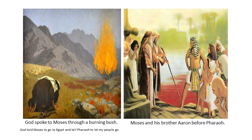God called Moses and spoke to him through a burning bush. He sent Moses and his brother Aaron to Egypt to tell Pharaoh to let his people go. Pharaoh refused, so God sent plagues to try to convince Pharaoh to let his people go. Even after God sent plagues to torment the Egyptians, Pharaoh still would not release the Israelites. It was not until the 10th plague that Pharaoh finally decided to let God's people go. This is the point where our video picks up the story today. Let's watch the video and discuss.